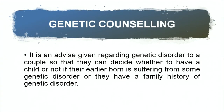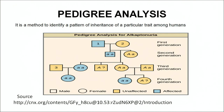Suppose a person who is a thalassemia carrier and another carrier - both the wife and husband are carriers for thalassemia - and they want to have a child. They can always go to a genetic counsellor to find out whether they should have a child or not. Genetic counselling is advice given regarding genetic disorders to a couple so they can decide whether to have a child, especially if their earlier-born child is suffering from a genetic disorder or they have a family history of genetic disorder. This work of genetic counselling is done by pedigree analysis.